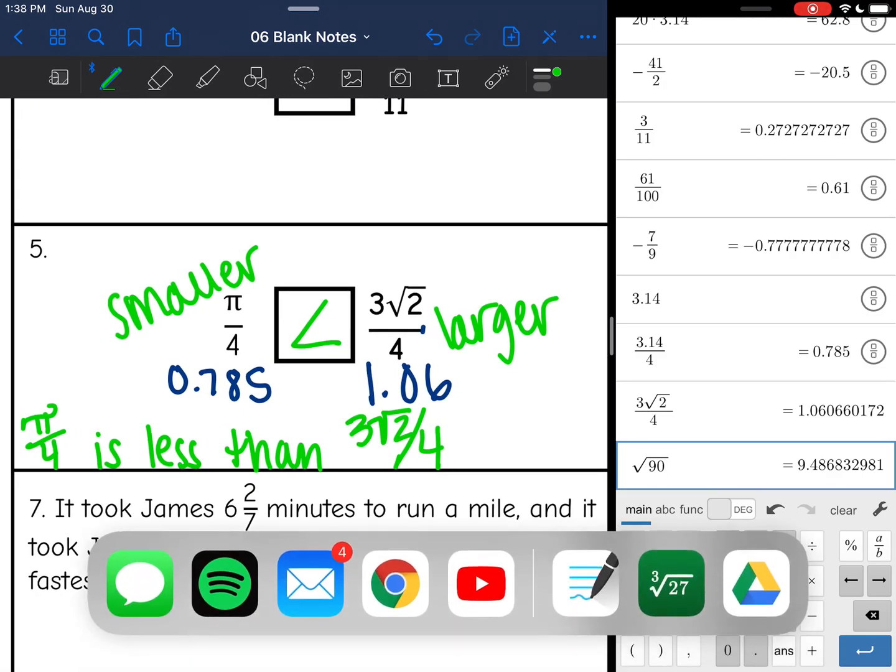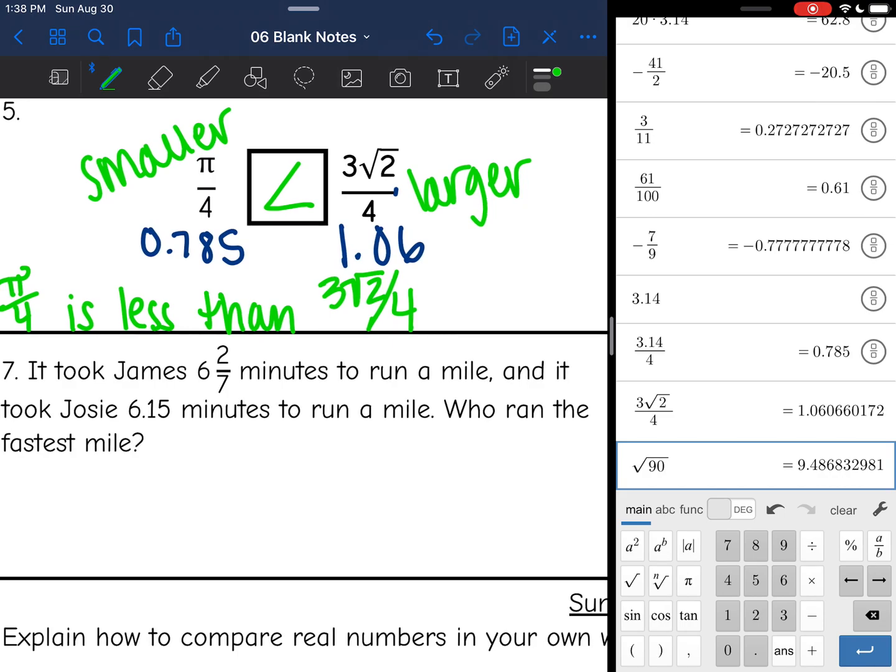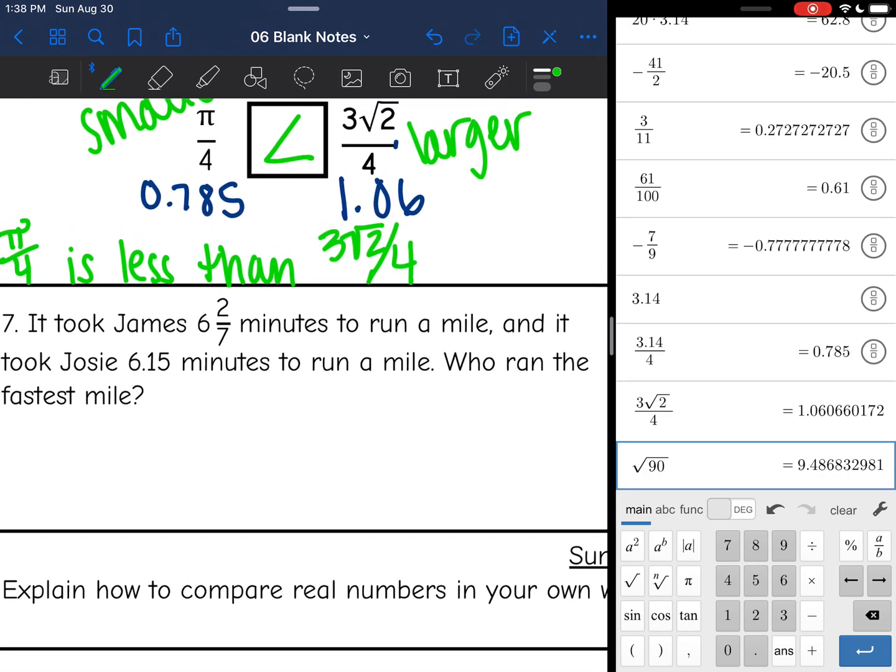Now we're going to have some application problems. It says it took James 6 and 2 sevenths minutes to run a mile, and it took Josie 6.15 minutes to run a mile. Who ran the fastest mile? So Josie's time is super easy to read. Let's convert James time to a decimal.